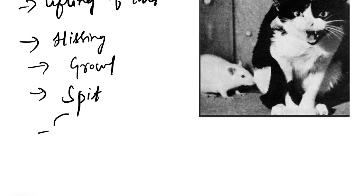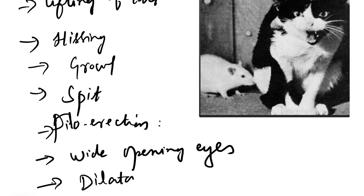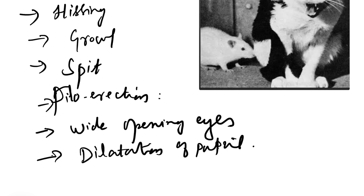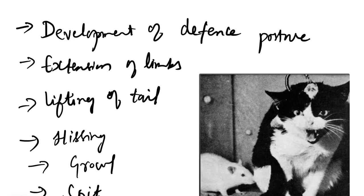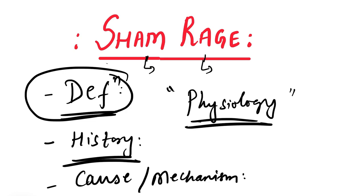This type of behavior is seen along with piloerection — that is, the hairs present on the skin become more prominent. There is wide opening of the eyes and severe dilatation of the pupil. Even on mild provocation, a severe savage attack is seen, along with alternating violent motion of the limbs. All these symptoms together are seen in experimental animals and that clinical condition is called sham rage.